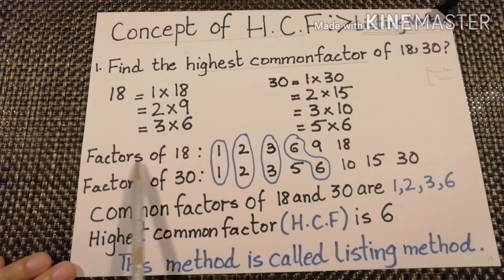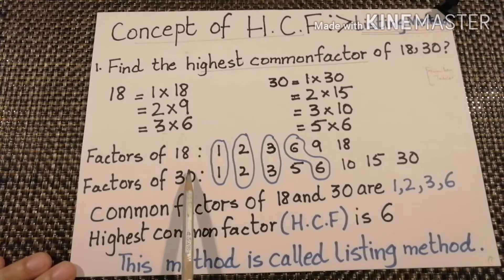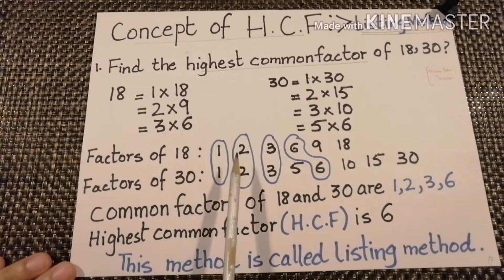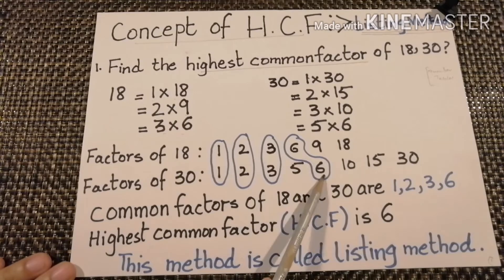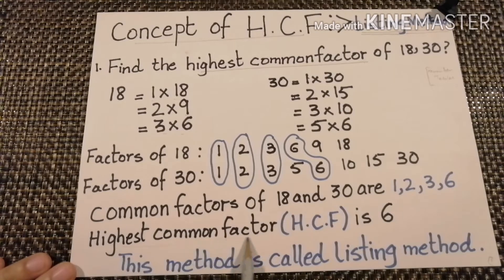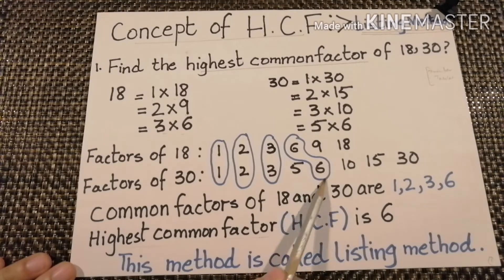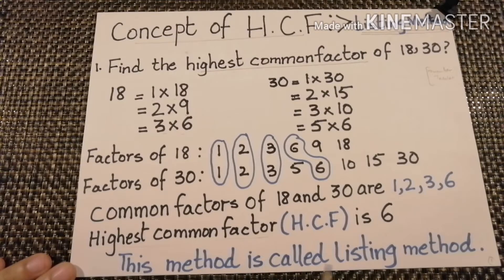Now we have written the factors in this form. We will take the common factors of both numbers, which are 1, 2, 3, and 6. Now we will take out the highest common factor. The highest common factor is 6. This method of finding the highest common factor is called the listing method.